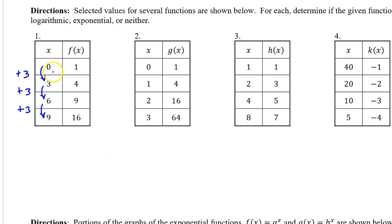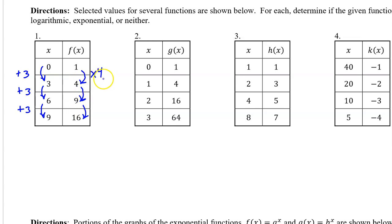For number one, we notice that the input values are equally spaced, so f of x is not logarithmic. This will either turn out to be exponential or neither. To check for exponential, we look to see if there is a common ratio among the output values — divide each output value by the previous output value. The first ratio is 4, but the second ratio, 9 divided by 4, is not 4. So no common ratio means it's not exponential either.